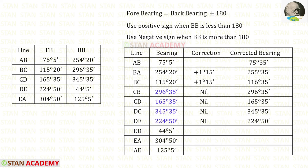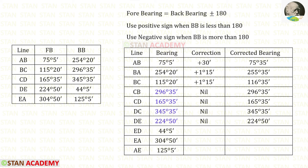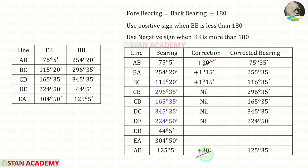The correction for AB is: 75 degrees 35 minutes minus 75 degrees 5 minutes, giving positive 30 minutes. Both readings at station A require the same correction. After applying the positive 30-minute correction to AE, we get a corrected bearing for AE of 125 degrees 35 minutes.